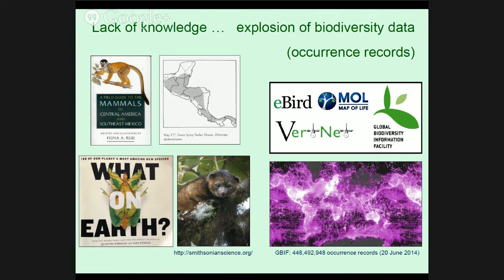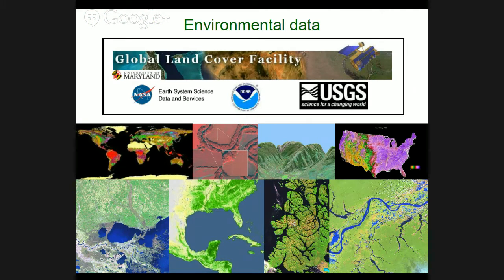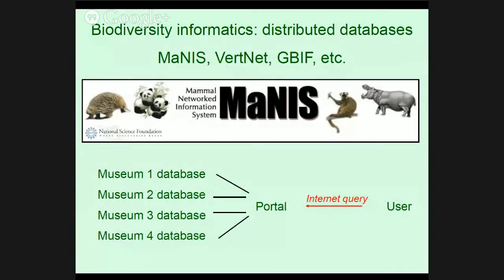At the same time as this lack of knowledge about individual species, we have had an explosion in the availability of biodiversity data — primarily occurrence records, points in space and time where a particular species has been observed. The question is, what can we do to harness these presence-only records, which is what we have for the vast majority of species on Earth? Over the past decade we've had an explosion in the quality and quantity of environmental data relevant for studying biodiversity. Biodiversity informatics has moved into this area, especially through distributed databases. The pioneer, in my view, was MaNIS, which has now been taken over by VertNet. All of these datasets generally feed into GBIF. The most important thing about a distributed database is that museums maintain their own data, making it continually larger and better, yet the user makes only a single query — and each time, hopefully it will be better and better information.